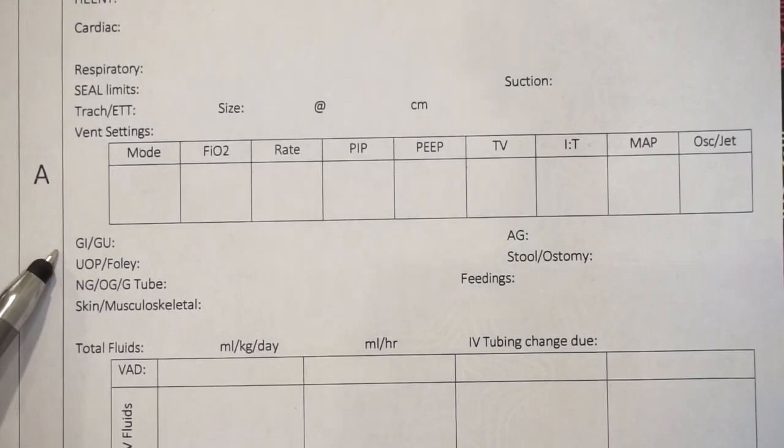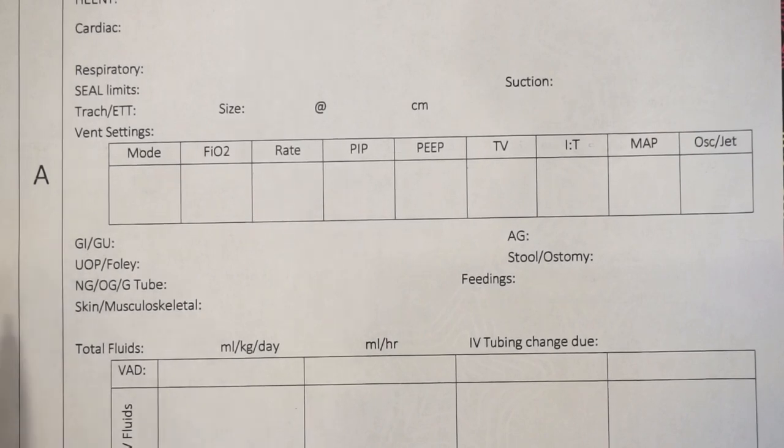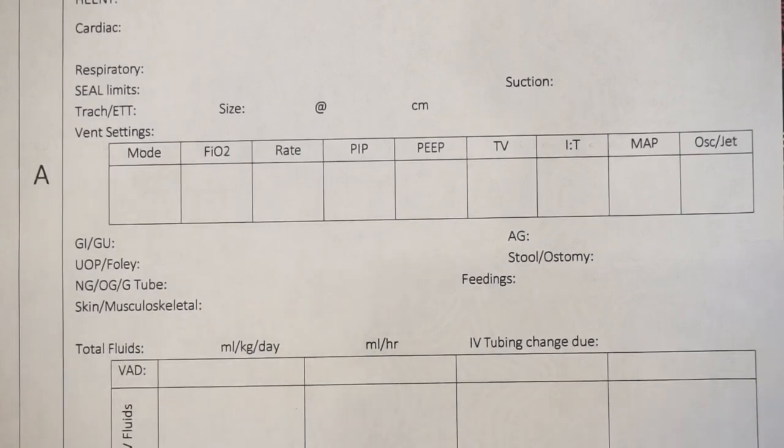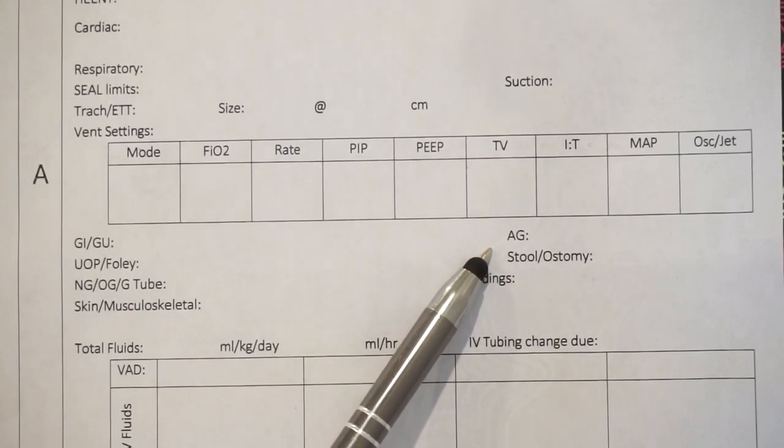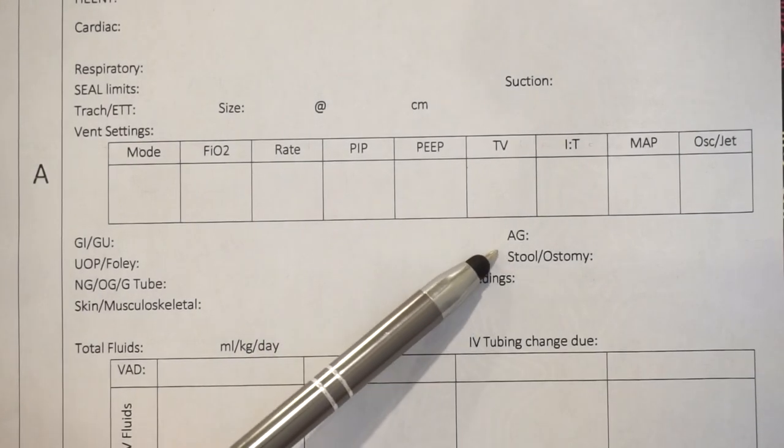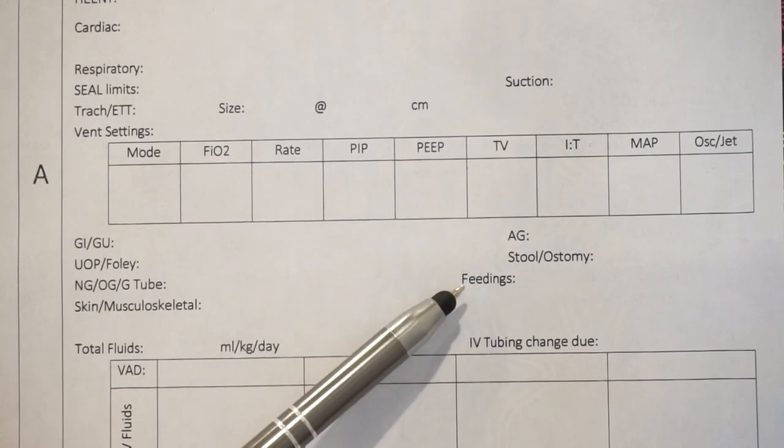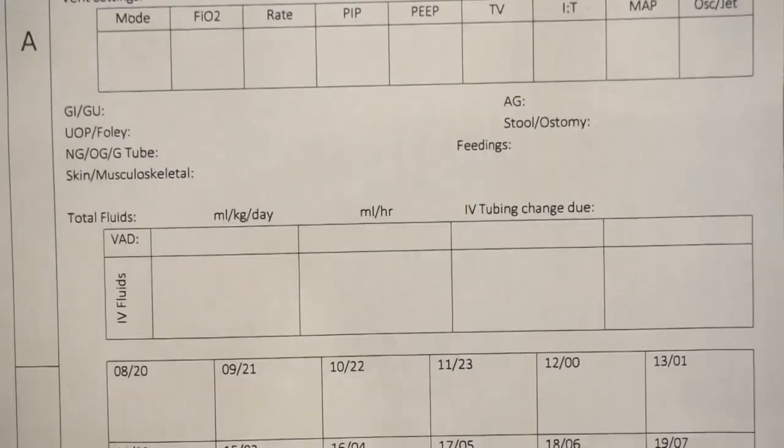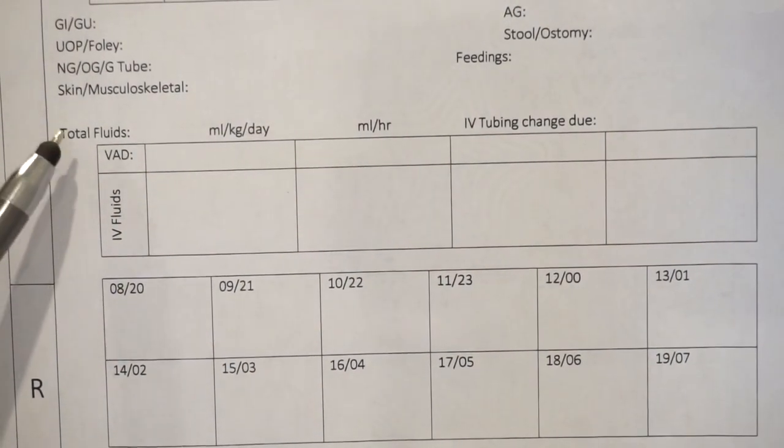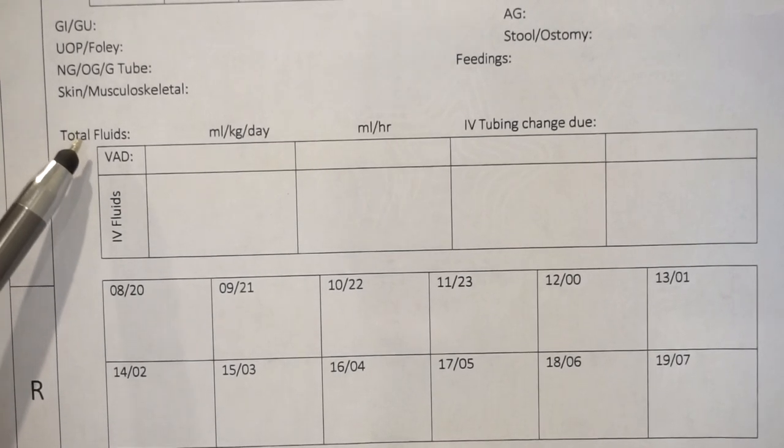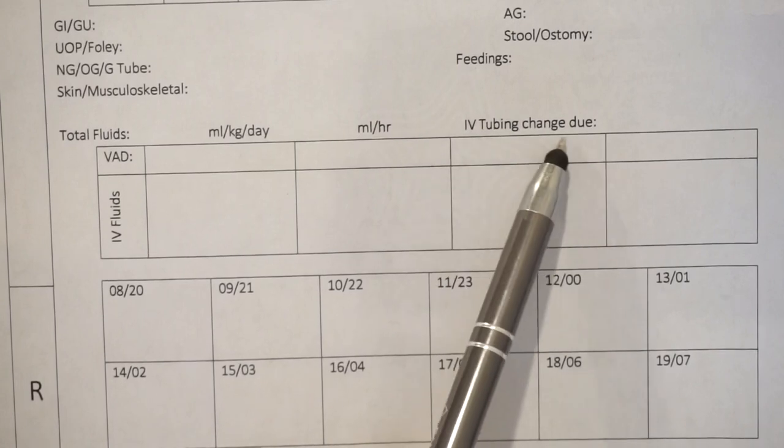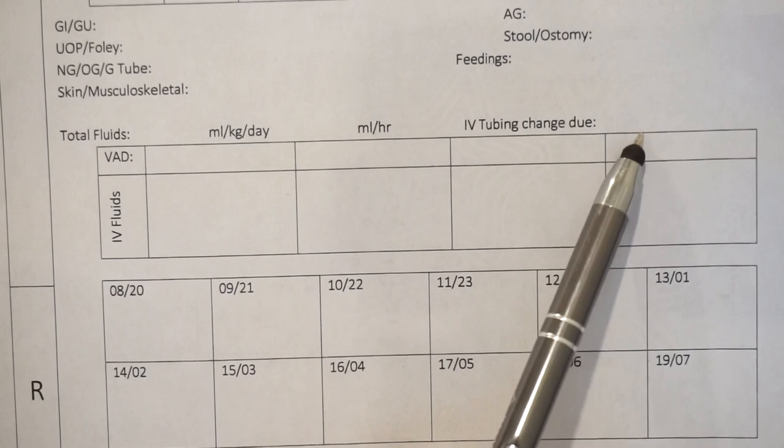GI/GU, that's where you would say if there are diaper weights or checks. So are we weighing their diapers or are we just documenting what's in it? This is where you would put their urine output or if they have a Foley. This is where we discuss feeding tubes, any issues with their skin or musculoskeletal system. AG stands for abdominal girth, so we talk about their belly measurements. Is their belly soft, round, distended? We talk about if they have an ostomy or any issues with bowel movements. And this is where we talk about their feed. So what are we feeding them? Were they NPO, getting mom's breast milk, donor breast milk, formula, anything like that. A lot of patients on our unit are on total fluids, so they have a limit of the amount of fluids that they're supposed to have every day. We would write that down here and then simplify it by talking about how much they get per hour. IV tubing change, we change our tubing every four days. So we have to keep up with the date and make sure that we're preventing infection.